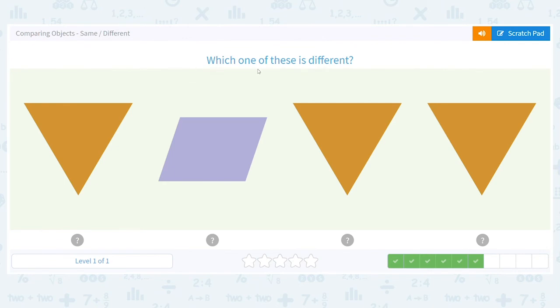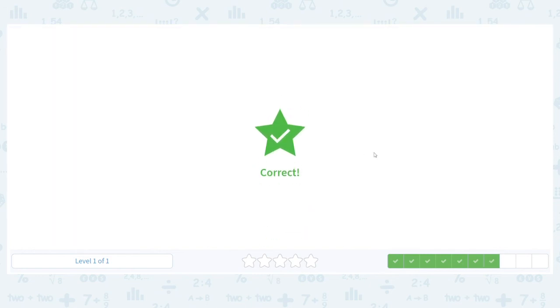Next, which one of these is different? I have triangle, parallelogram, triangle, triangle. Which is different? Don't just look at the colors. Look at the shapes. Great job! That parallelogram is different.